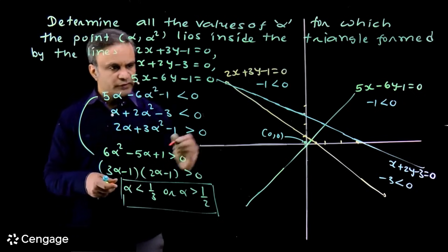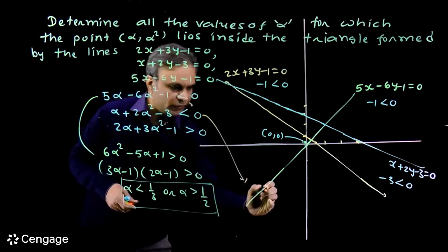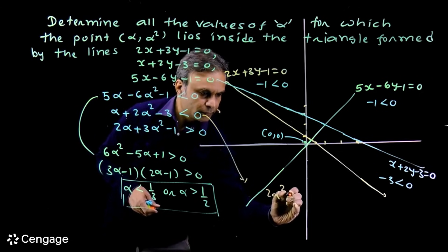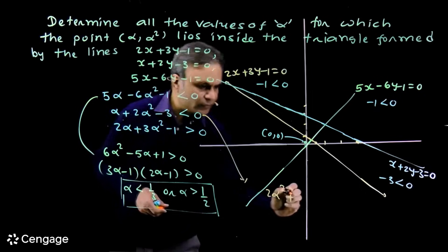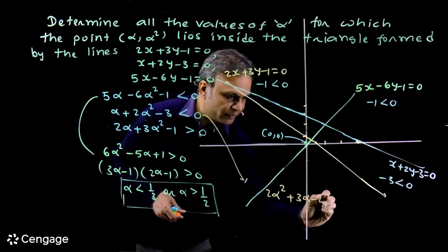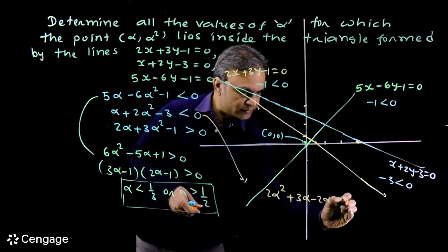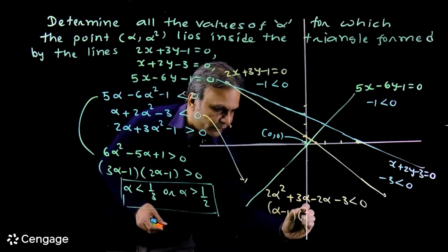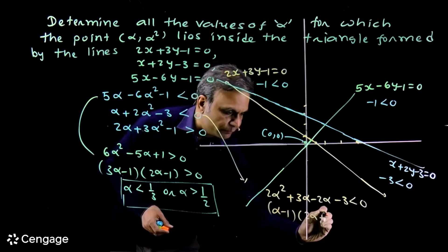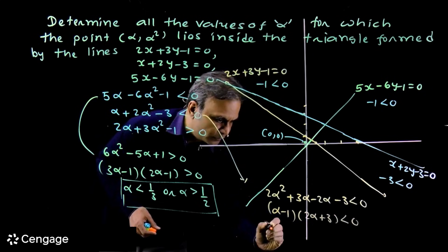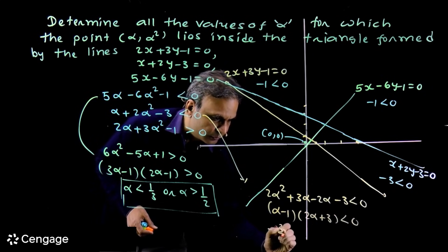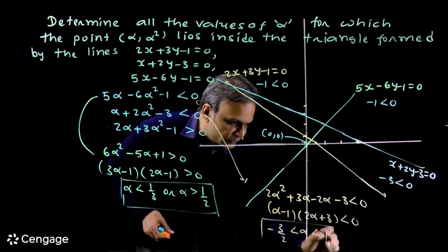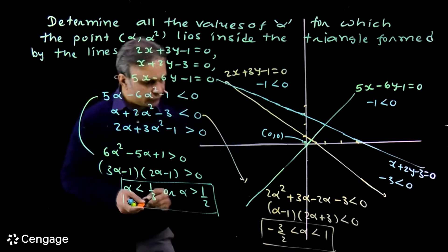Now let us solve the second inequality: 2α² plus α minus 3 less than 0. The factors are (α minus 1)(2α plus 3) less than 0, giving minus 3/2 less than α less than 1. This is the second set of values of alpha.